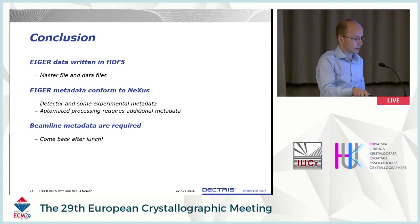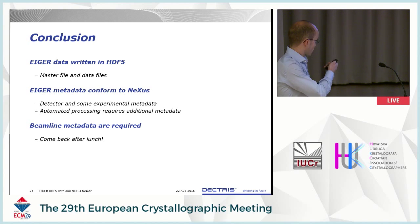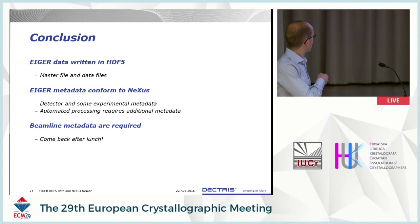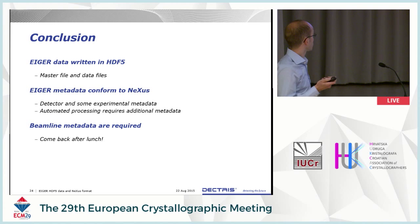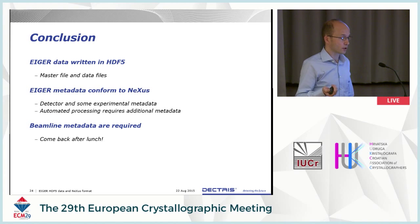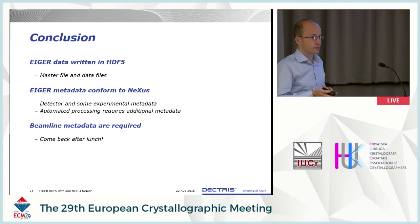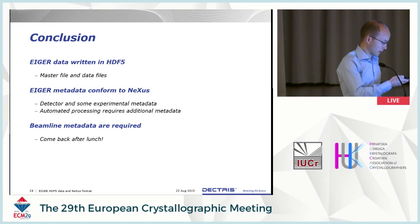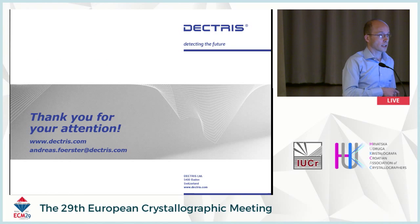To re-emphasize: Eiger data will come with metadata. It will contain metadata to describe the detector and there will be some experimental metadata. Together these data are sufficient for processing. However, to make it truly automated and independent of the beamline will require some additional metadata, especially on the geometry. But there are ways of including that, and we encourage that this actually be included during the experiment. More on beamline metadata after lunch.